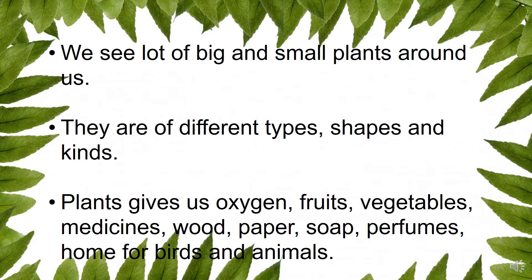We see a lot of big and small plants around us. They are of different types, shapes and kinds. Plants give us oxygen, fruits, vegetables, medicines, wood, paper, soap, and perfumes. They also provide a home for birds and animals.